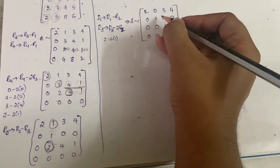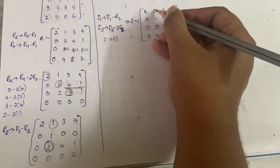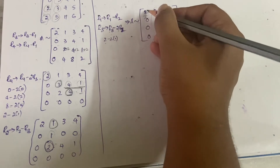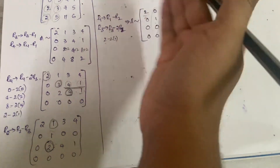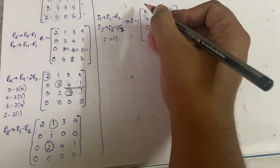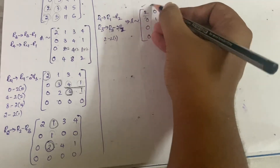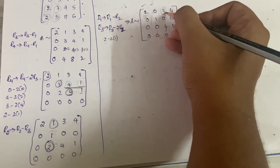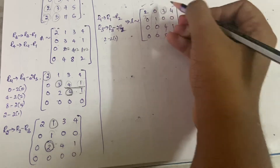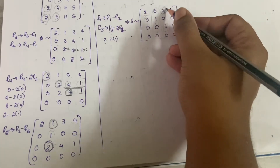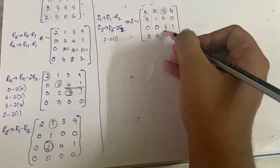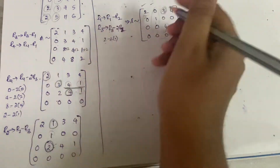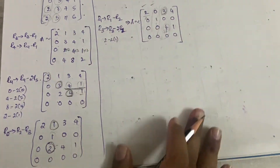Now this column is done, this column is done. If you divide the leading column by 2 you get 1 — that is easy and can be done last. Now let us see the third column: we need to make the element 3 in R1 become zero. We don't have a multiple of 3 easily available.